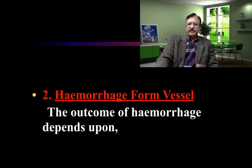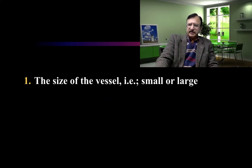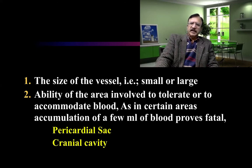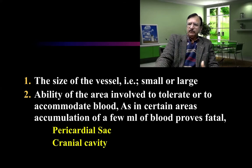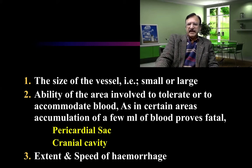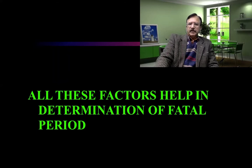Hemorrhagic phenomena from vessels can also cause sudden death. The outcome of hemorrhage usually depends upon the size of the vessel — small or large — and the ability of the area involved to accumulate blood. In certain cases, the accumulation of just a few milliliters of blood can prove fatal; for example, in the pericardial sac or the cranial cavity, a small amount of blood will put enormous pressure on the heart and the brain. The extent and speed of hemorrhage also help in determining the fatal period.